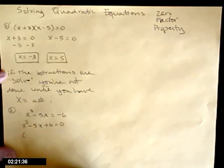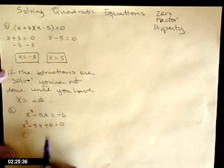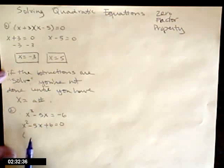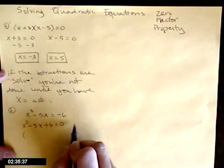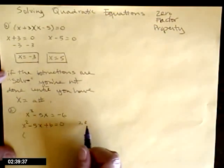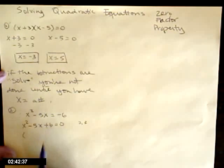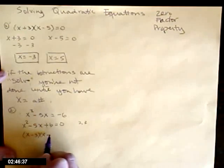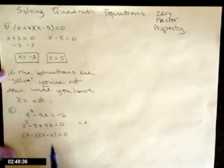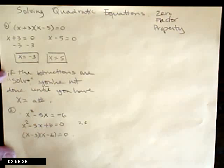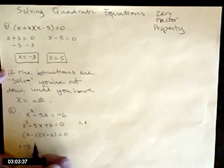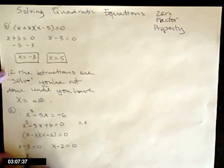Be careful — this one factors, and it looks like it could factor a bunch of different ways, but there's only one correct one. The leading coefficient is 1, it's a trinomial, so I need a pair of factors of 6 that add to give negative 5. Since the 5 is negative and the 6 is positive, both signs inside the parentheses are negative: x minus 3 times x minus 2. So either x minus 3 equals 0 or x minus 2 equals 0, giving x equals 3 or x equals 2.